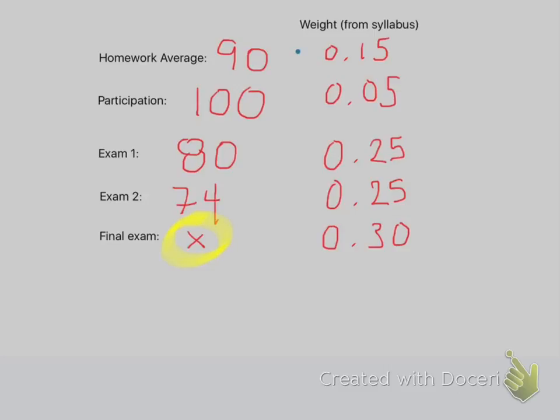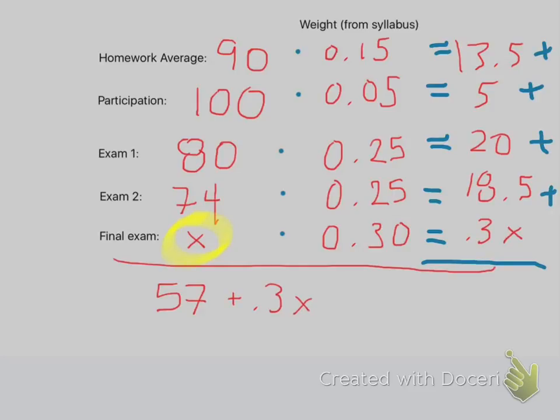So just as before, you're going to multiply all these numbers and add them all up. When you do that, you get 57 plus 0.3X.